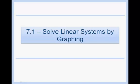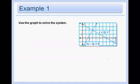Today we're going to solve linear systems by graphing. In example 1 they ask us to use the graph to solve the system. All it means when we're using a graph to solve a system is to say where do the two lines intersect.